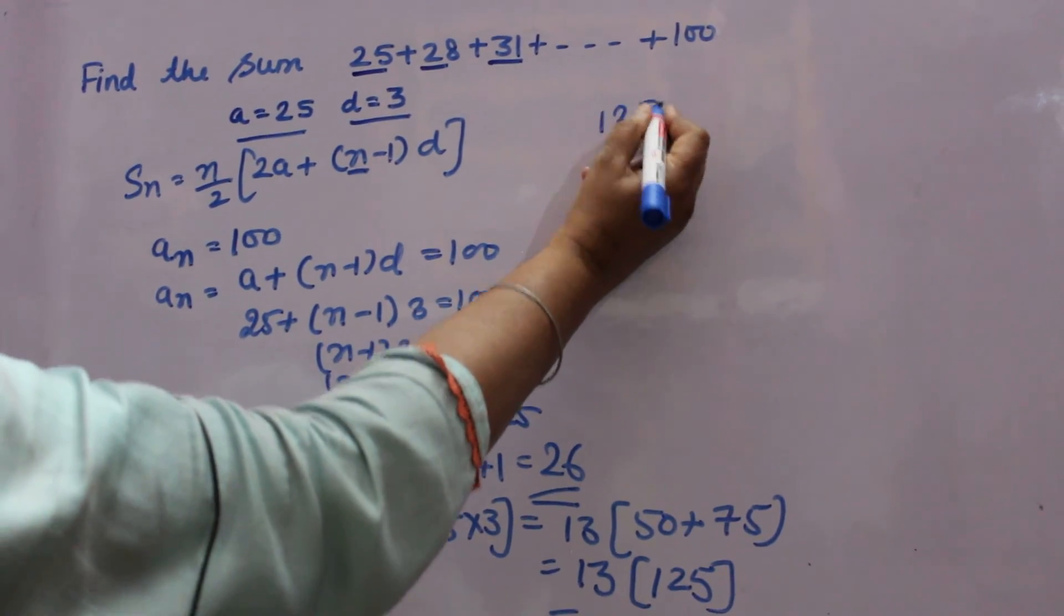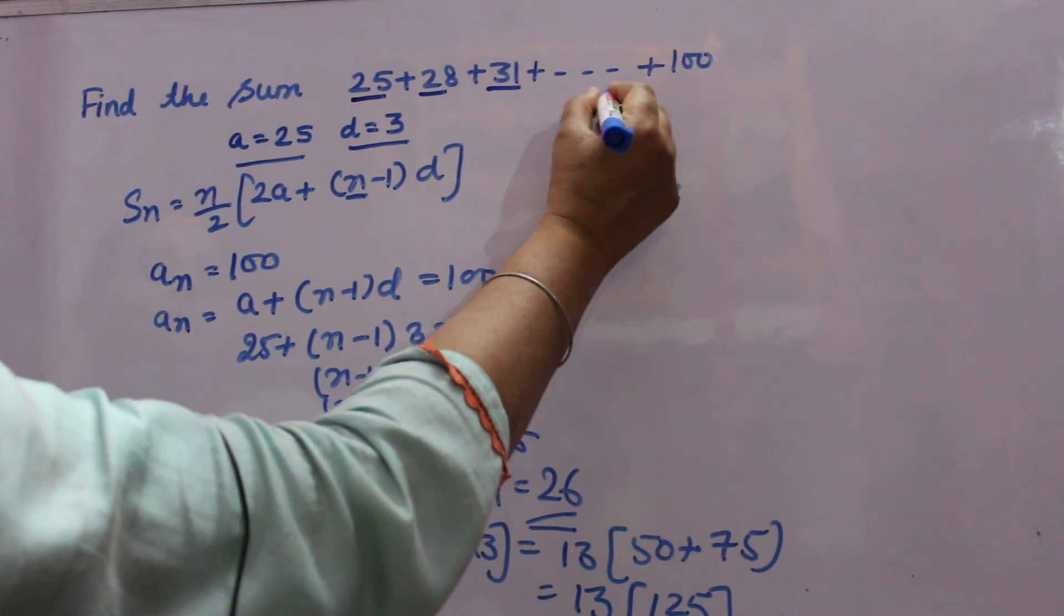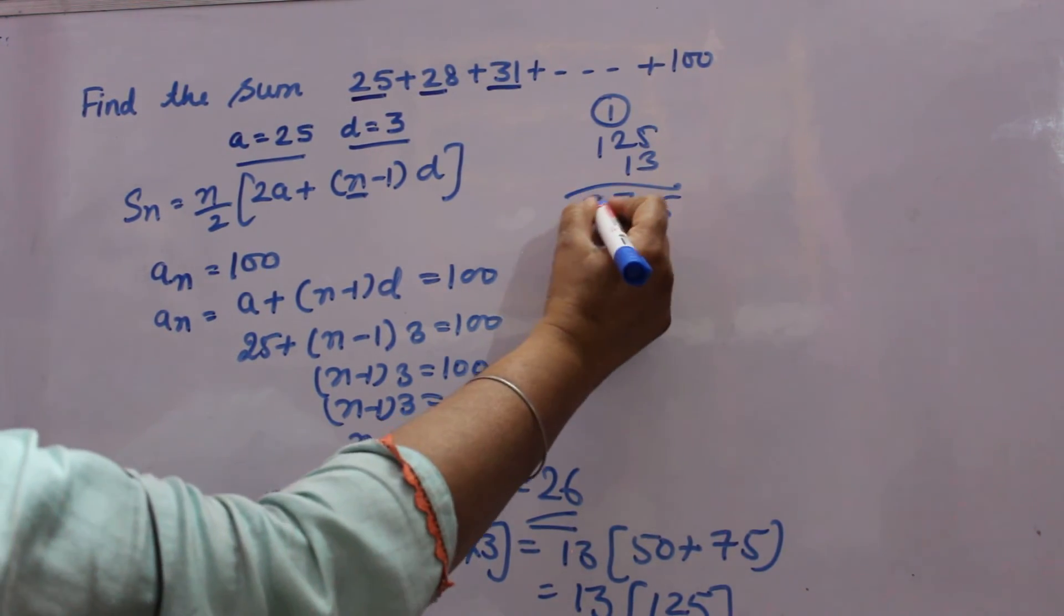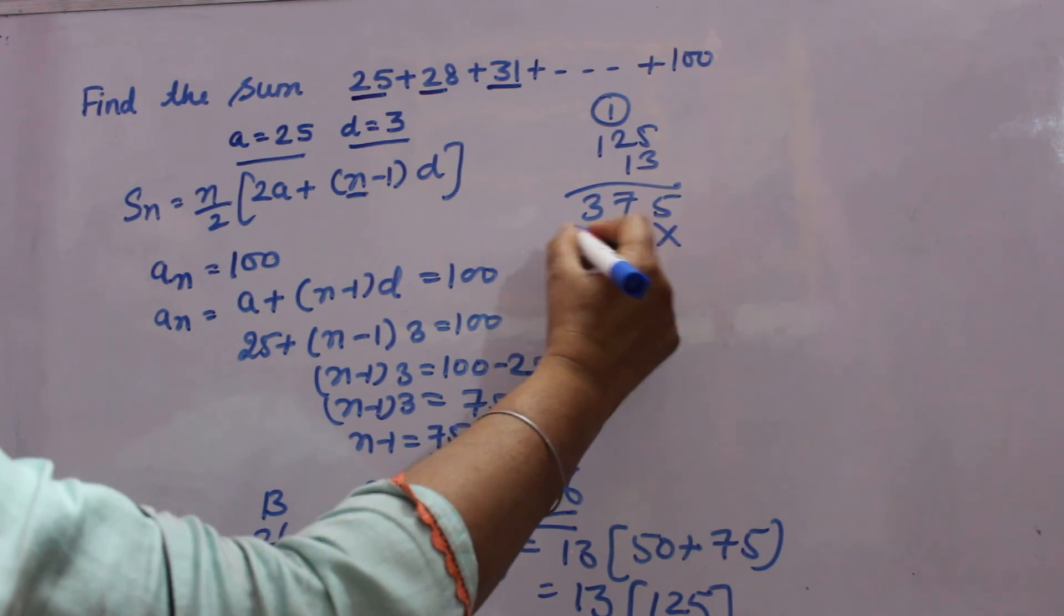125 ko jab 13 se multiply kia. 5, 3s are 15, 3, 2s are 6, 7, 3, 1s are 3.